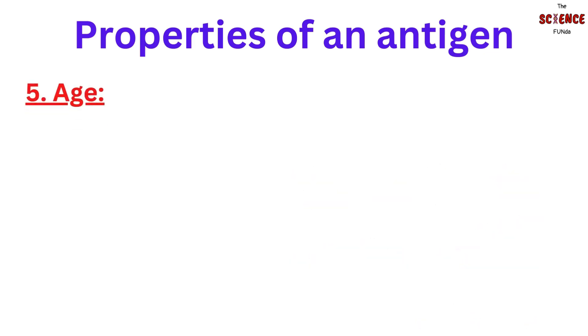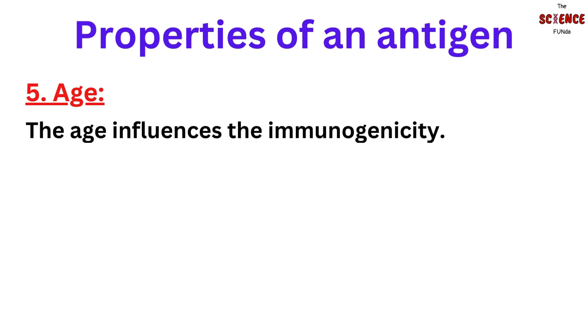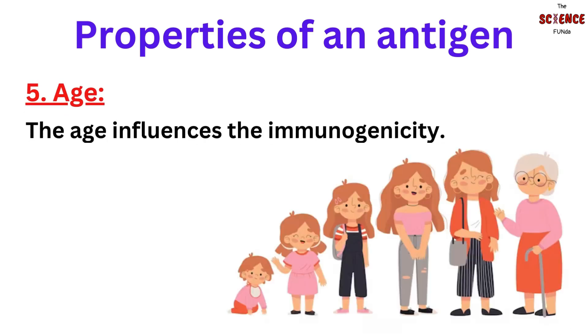The fifth property is age. Age influences the immunogenicity. Very young and very old people exhibit very low immunogenicity.